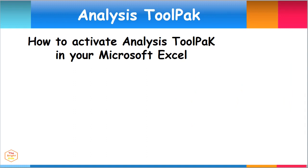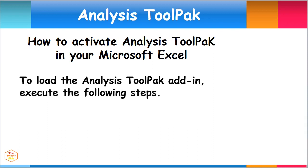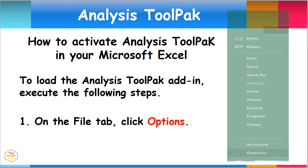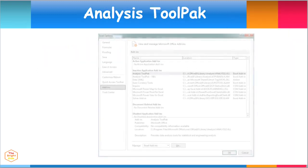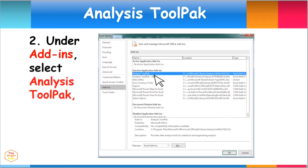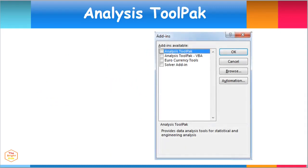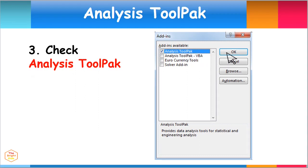To conduct the single factor ANOVA, make sure the Analysis ToolPak is activated in your system. To load the Analysis ToolPak add-in, execute the following steps: on the File tab, click Options. Under the Add-ins menu, look below the inactive application add-ins, select Analysis ToolPak, and click the Go button, then click OK. When the dialog box appears, make sure to check the Analysis ToolPak tick box and click OK.